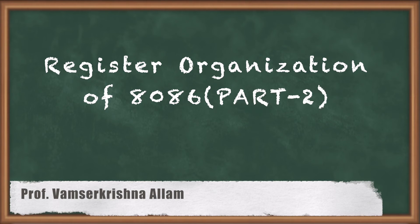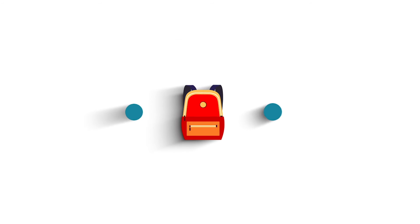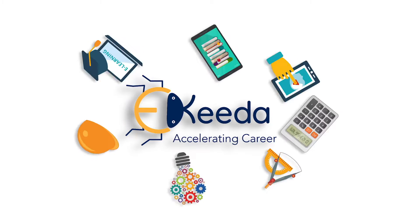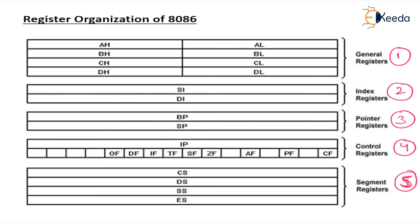Hi dear students, today we will discuss register organization of 8086, Part 2. Coming to today's class — in the last class we discussed general purpose registers and completed them. AX is accumulator, BX is base register, CX is counter, DX is extra register, used as a special register compared to the AX register. Now we will move on to segment registers.